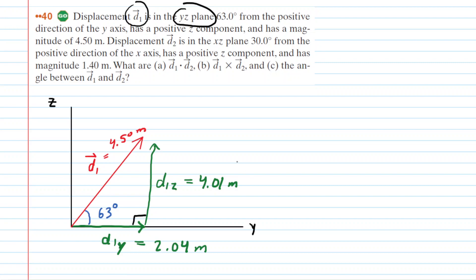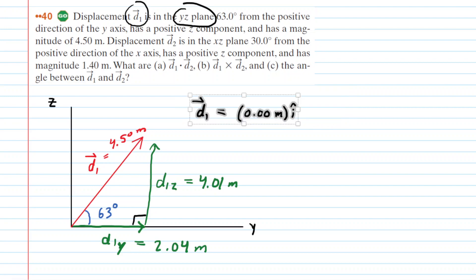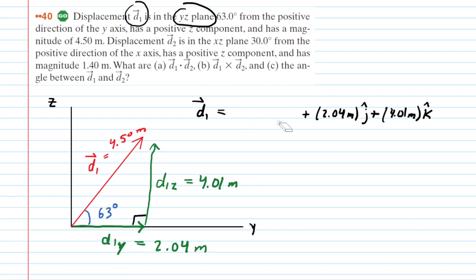Now that we've found the components, we can write vector D1 in unit vector notation. Notice there was no X component — we are looking exclusively on the YZ plane, so there is 0 X component in the I hat direction. The Y component was positive 2.04 meters, represented by J hat. The Z component is 4.01 meters in the K hat direction. Because the X component is 0, we can eliminate it, and this is the final unit vector notation of vector D1.